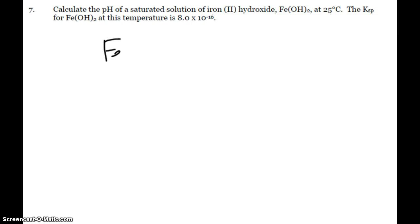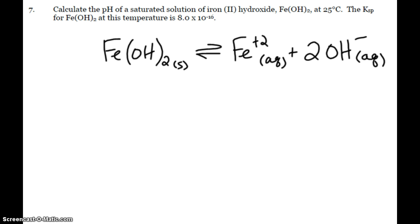Alright, so iron 2 hydroxide is going to break apart into the iron 2 ion plus 2 hydroxides. And so my ICE table - don't have to worry about my solid. 0, 0, plus X, plus 2X. So at equilibrium I have X and 2X.